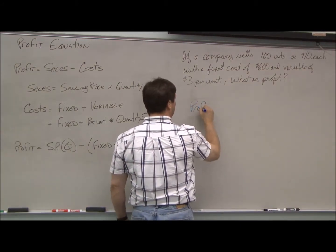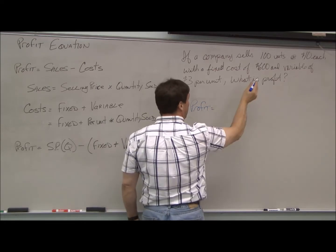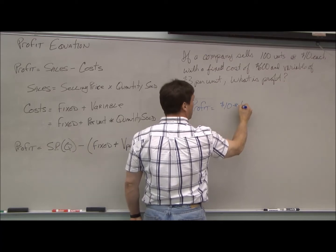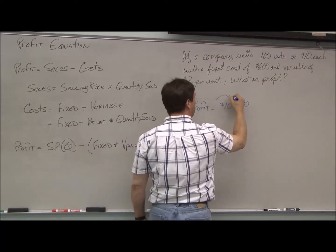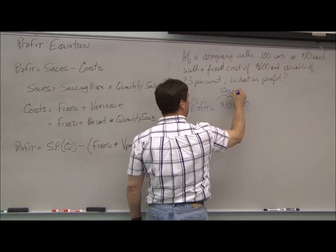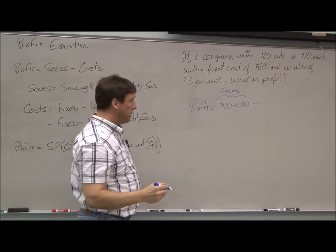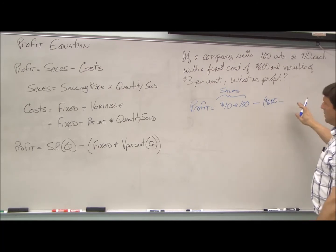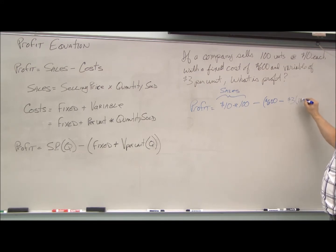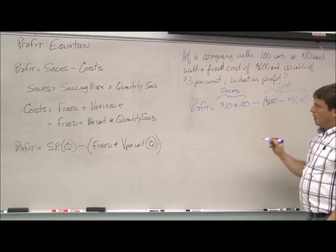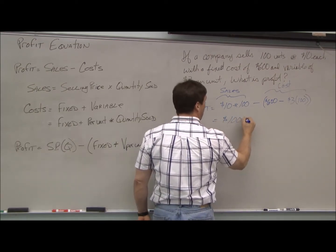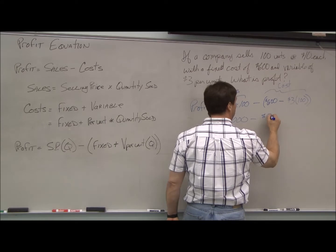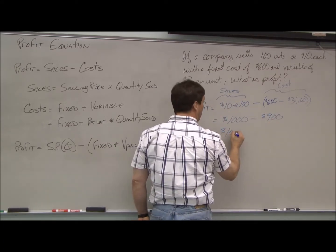Our profit equals $10 times 100 units, which represents our sales. From that, we subtract our fixed cost of $600 minus our variable cost of $3 times 100 units. This is our cost. We have $1,000 minus $900, so our company has a profit of $100.